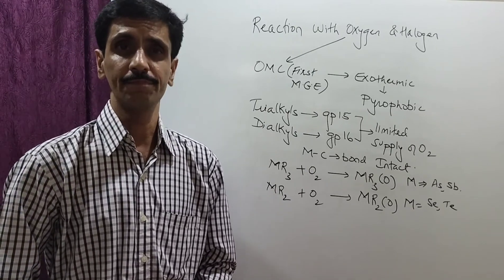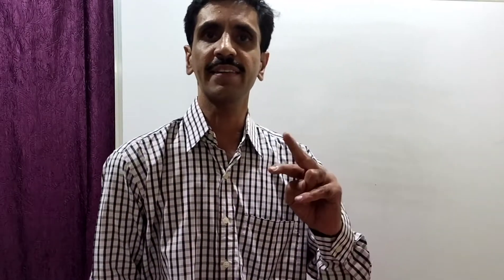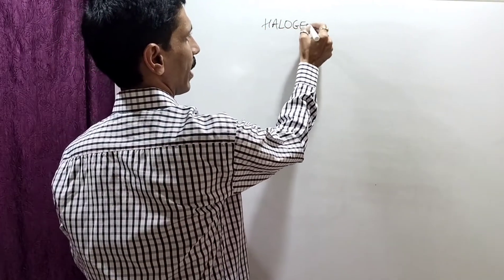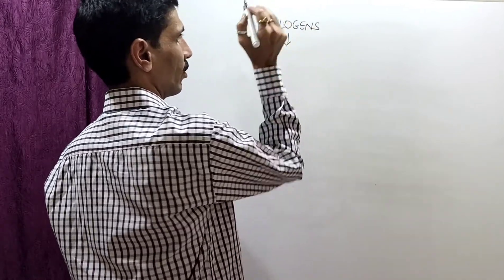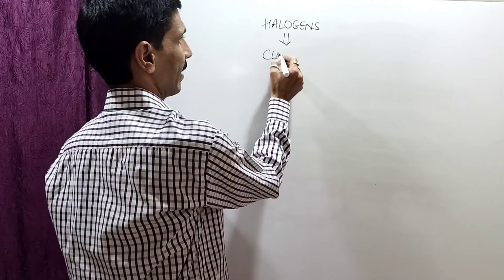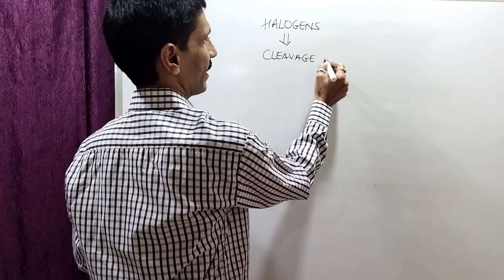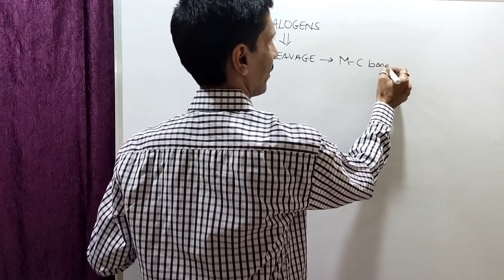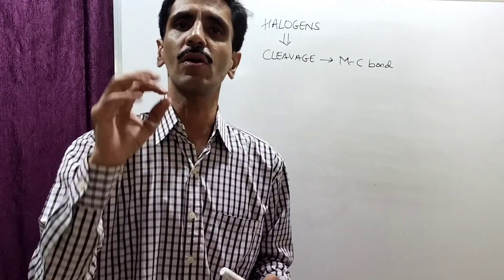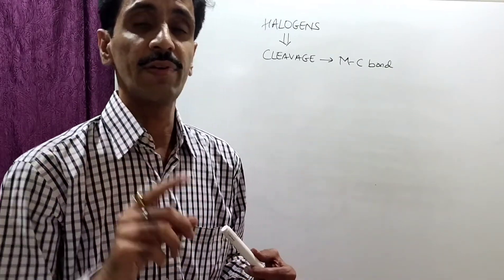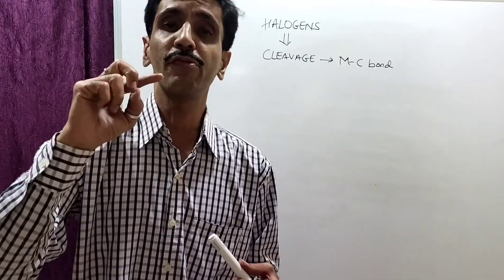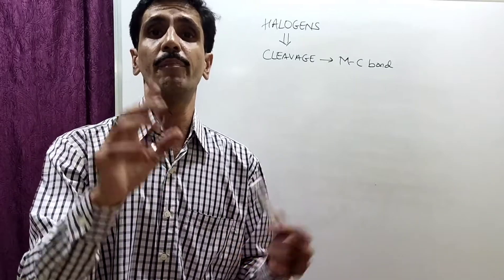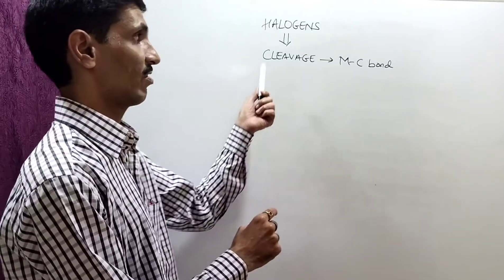I hope you have understood up to this very well. Now, my dear friends, we begin with the next part — and that is halogens. We learnt about oxygen; we now go into halogens. When we talk about halogens, the first thing which we need to remember — and that is going to be different from what I explained under oxygen — is that there is going to be a cleavage of the metal-carbon bond. Bond cleavage means bond breaking.